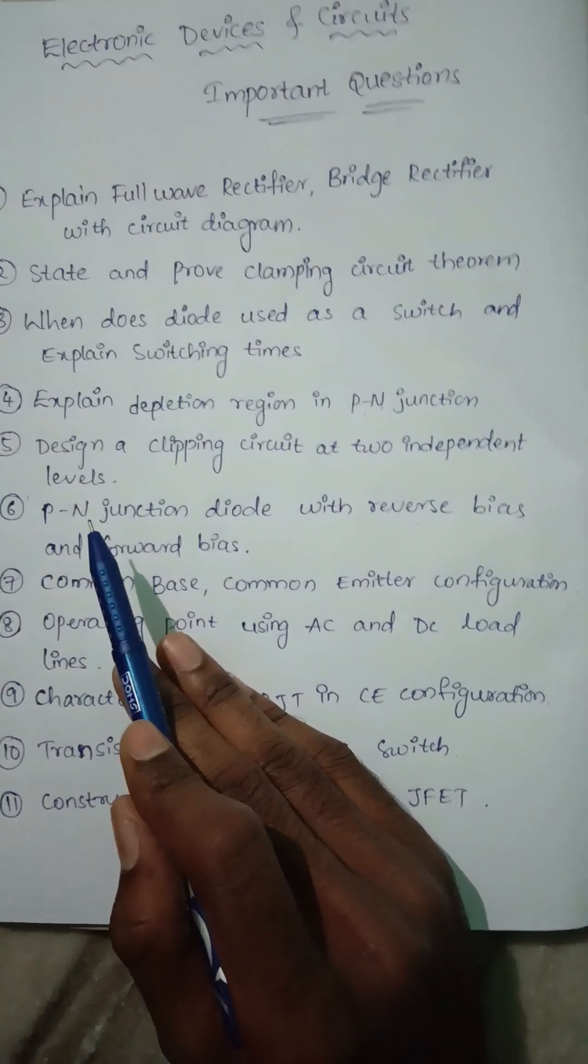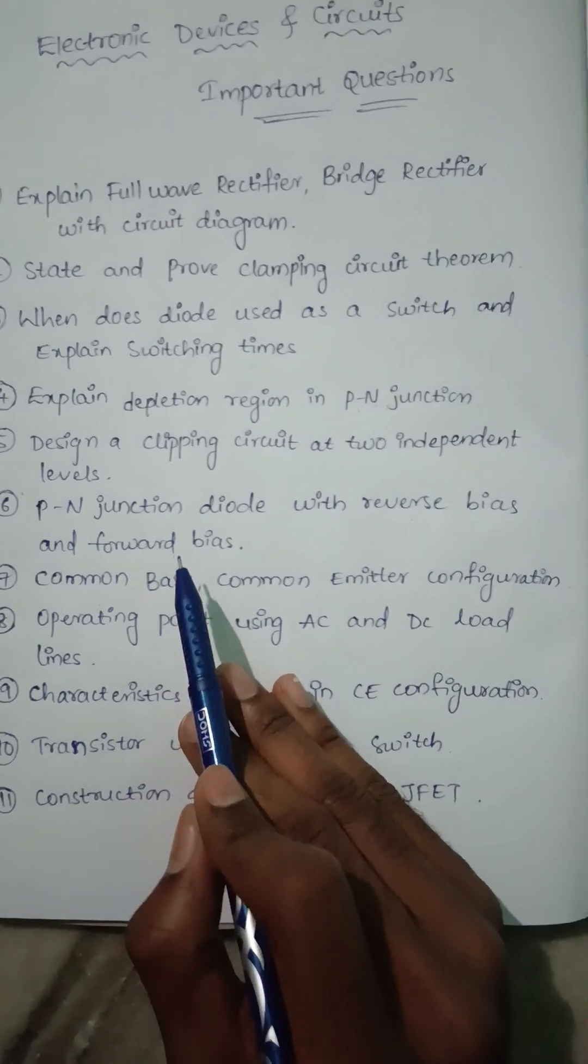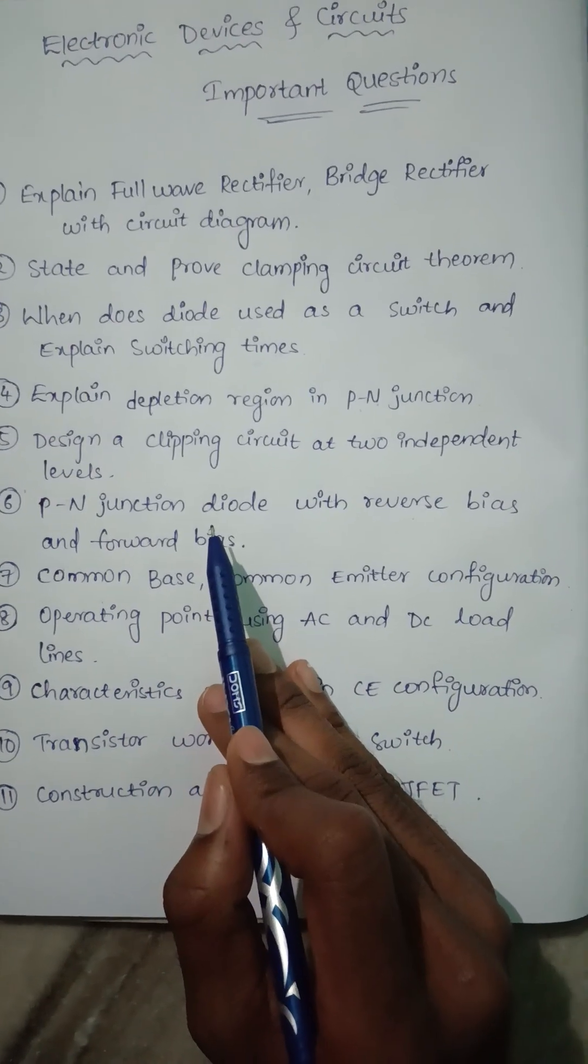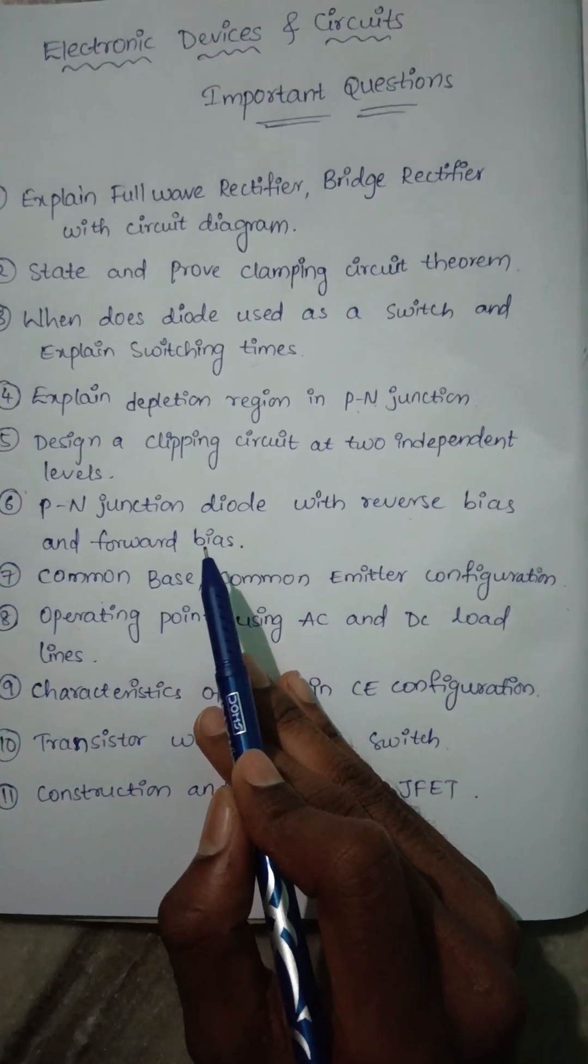Next is PN junction diode with reverse bias and forward bias. It may be asked in first unit or second unit.